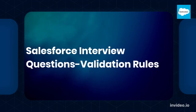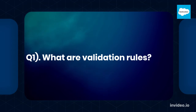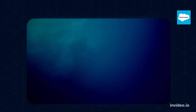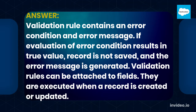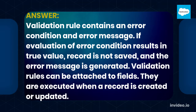Salesforce Interview Questions: Validation Rules. Q1. What are Validation Rules? A validation rule contains an error condition and an error message. If evaluation of the error condition results in a true value, the record is not saved and the error message is generated. Validation rules can be attached to fields and are executed when a record is created or updated.